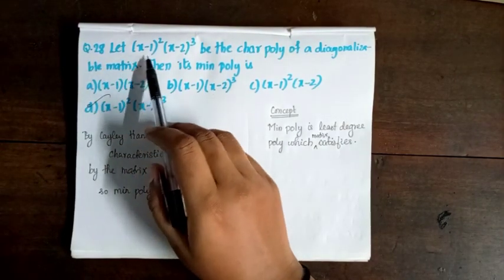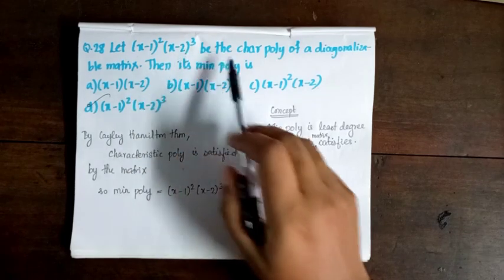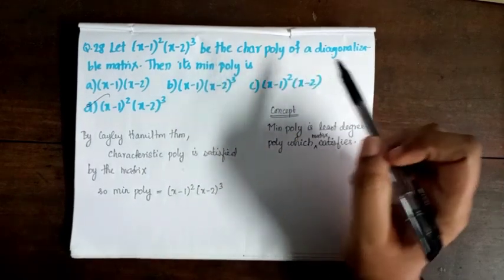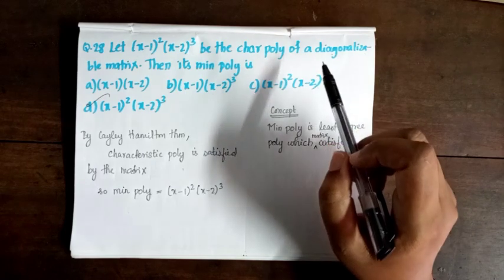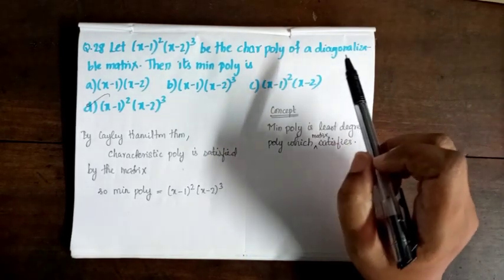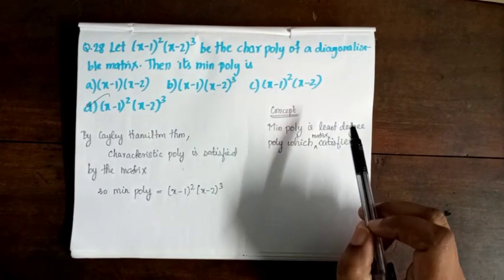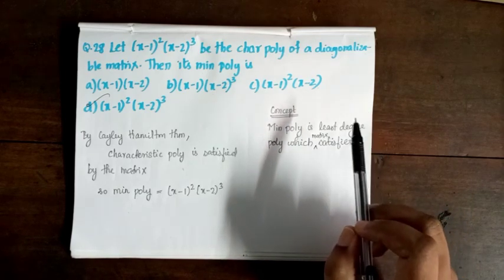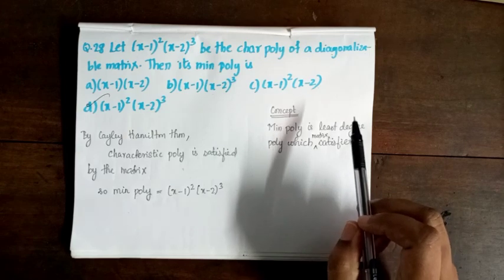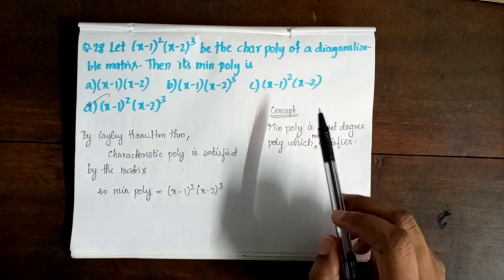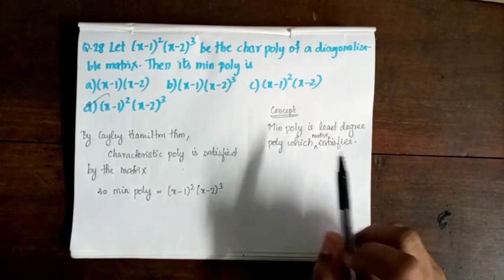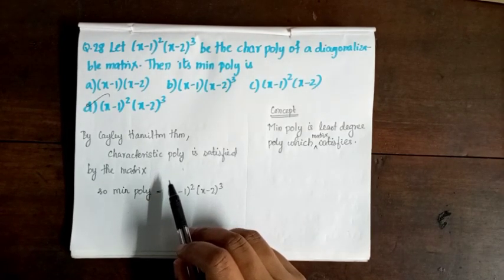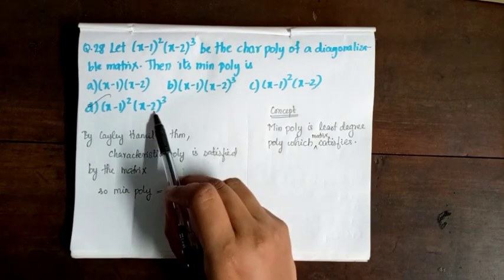Question 28. Let (x-1)²(x-2)³ be the characteristic polynomial of a diagonalizable matrix. Then its minimal polynomial is? The minimal polynomial is the least-degree monic polynomial the matrix satisfies. For a diagonalizable matrix, the minimal polynomial has each distinct eigenvalue appearing exactly once. By Cayley-Hamilton theorem and the diagonalizable condition, option D is correct.